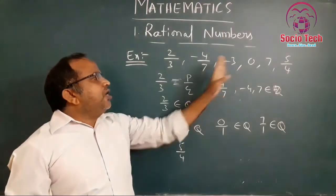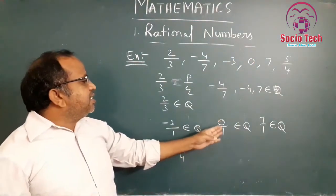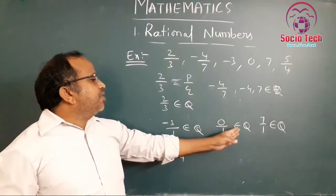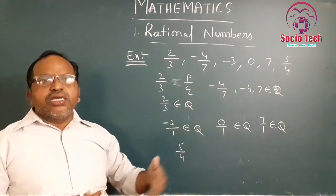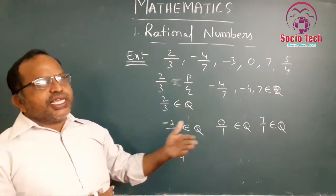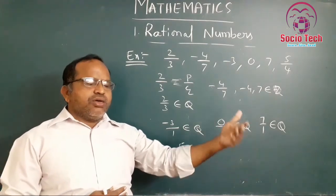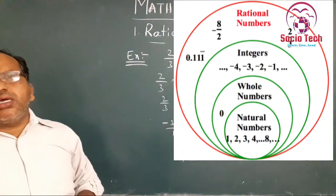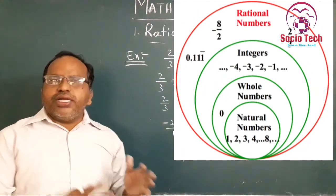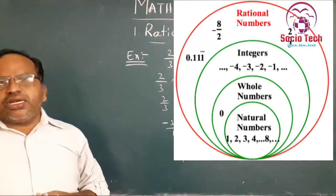Whole numbers begin with 0, and 0 can also be written as 0/1, which is in the form of p by q, so it is also a rational number. By seeing the numerators — whether they are whole numbers, natural numbers, or integers — all natural numbers, all integers, and all whole numbers belong to the rational numbers, which are in the form of p by q.